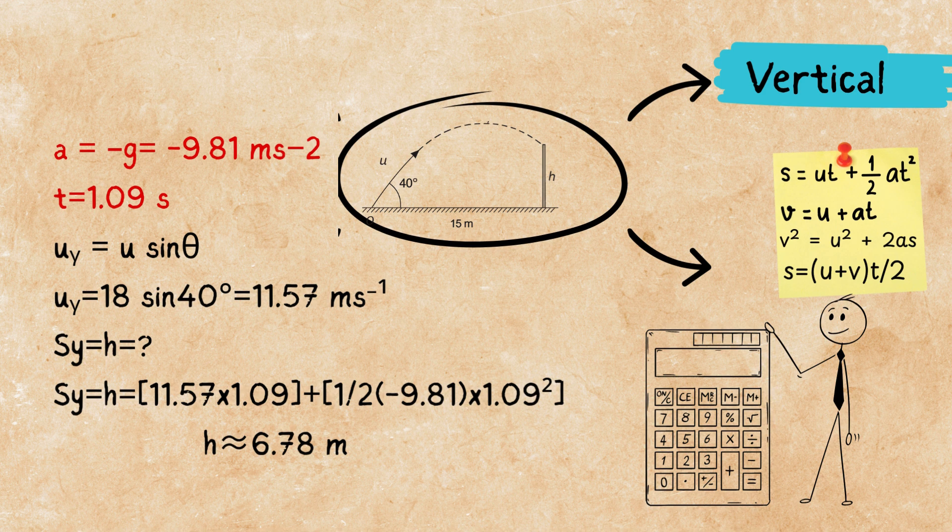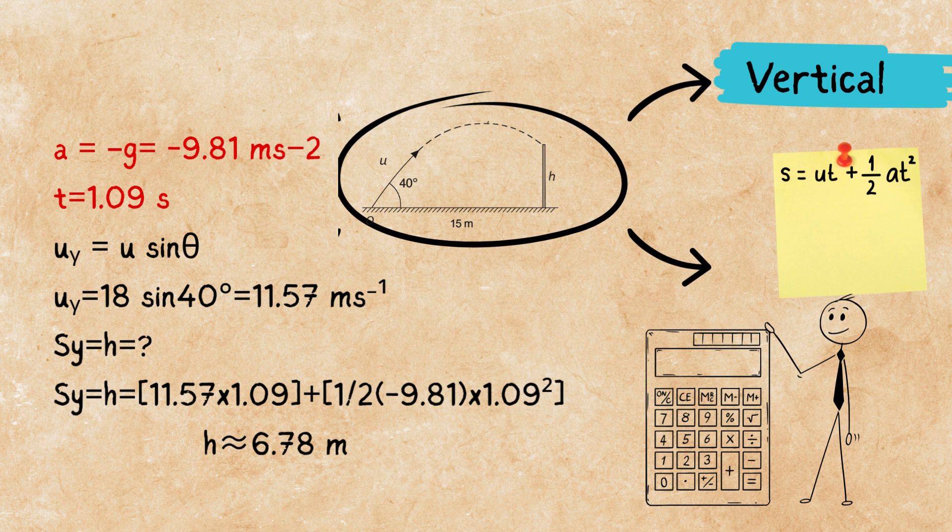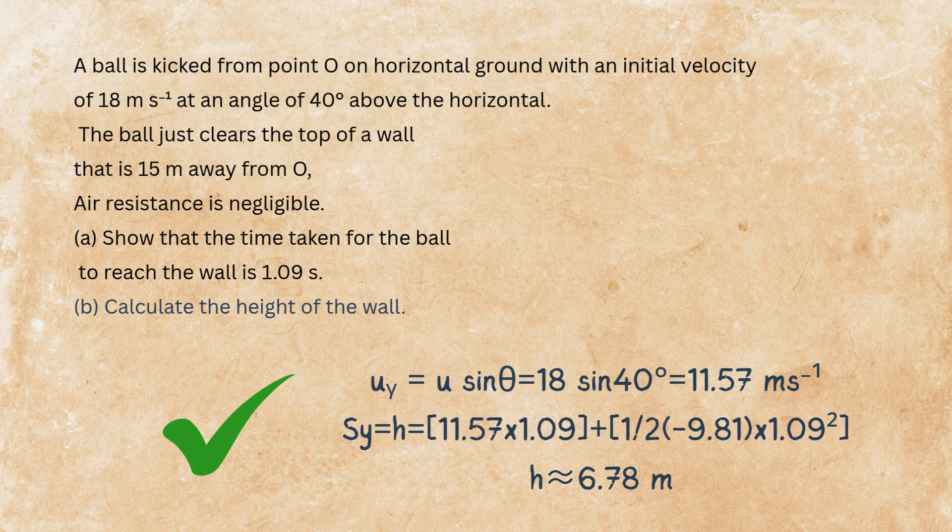We have the time. And we have the initial velocity in vertical direction, which is U sine theta, and is 11.57 meters per second. So, we look at our equations of motion. We choose the one that has time, acceleration, initial velocity, and can give us the displacement in vertical direction, which is the first one. Use of the calculator, we got it. The height of the wall is about 6.78 meters. And there we go. Part B is done as well.